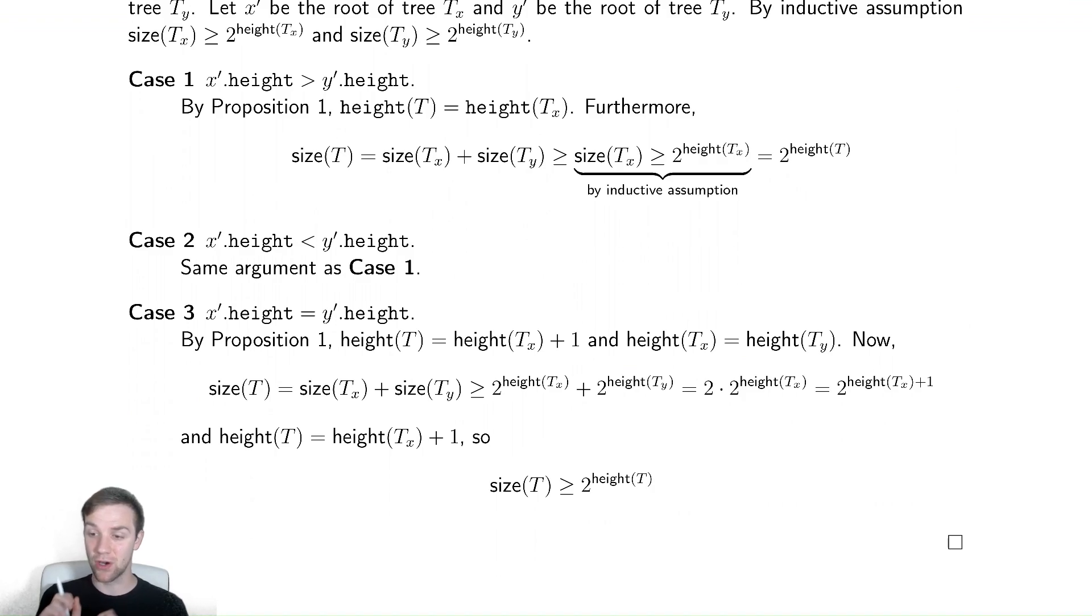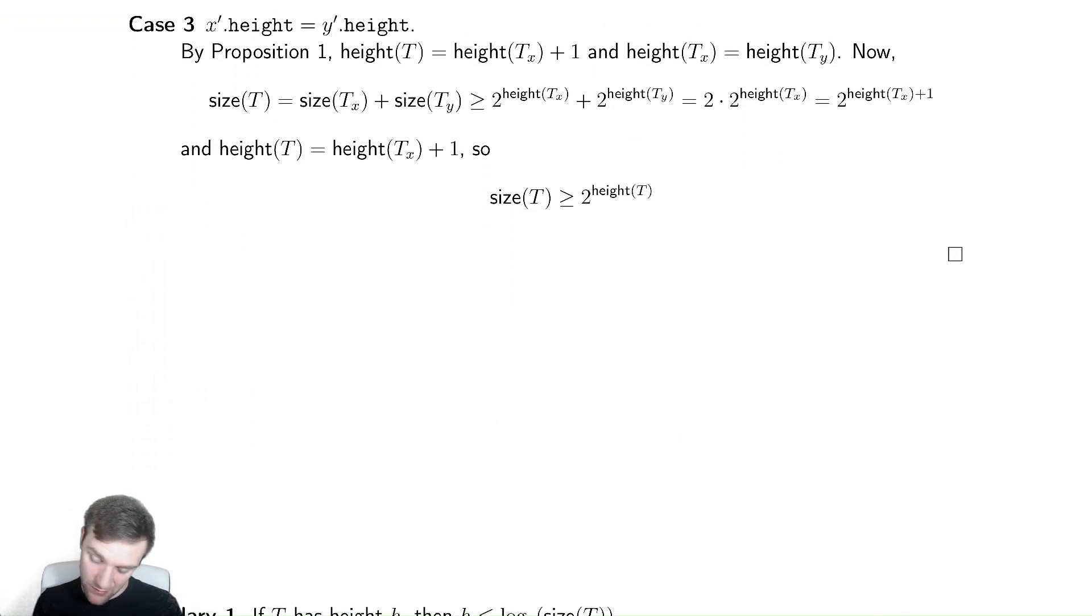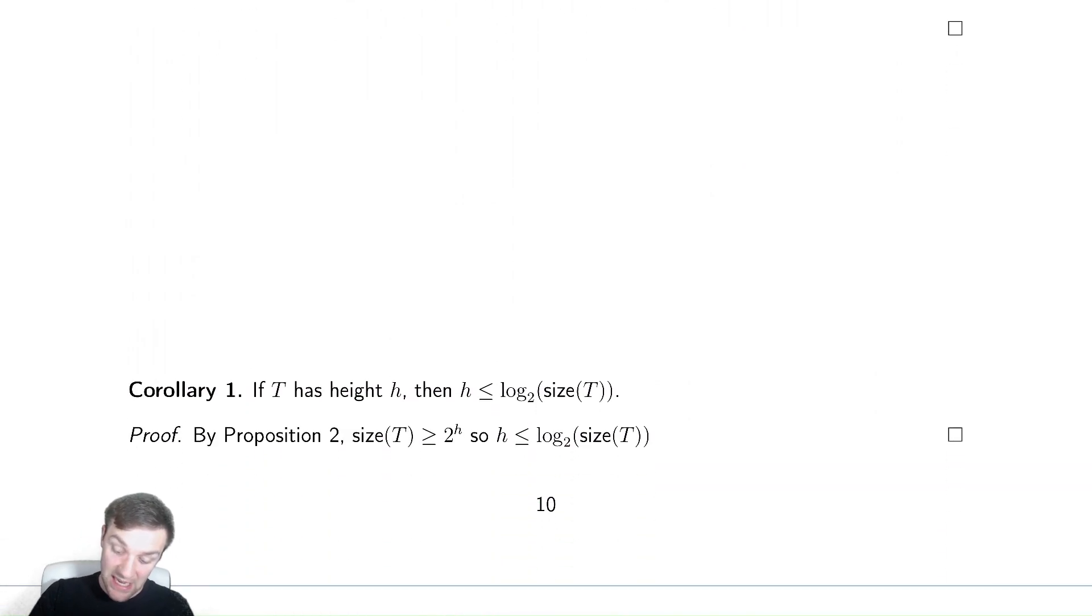Now that we have this though, we have a corollary, which is that if it has a height h, then the height is at most log base 2 of the size. We knew this was going to happen. That's why we had that proof that was very handy. So just do arithmetic. That's it. So the height is at most log base 2 of n.